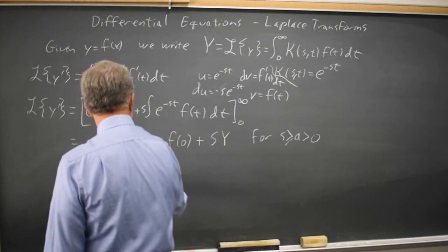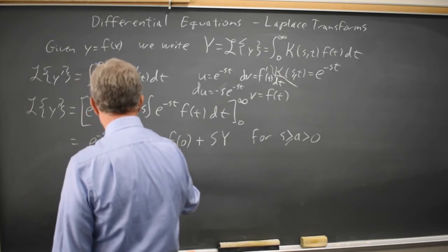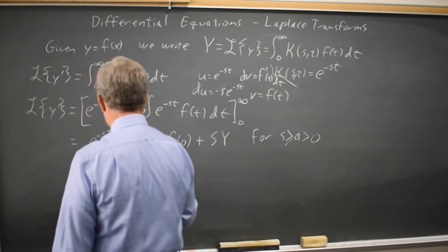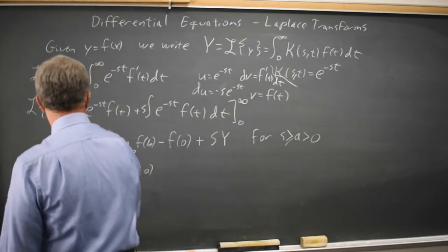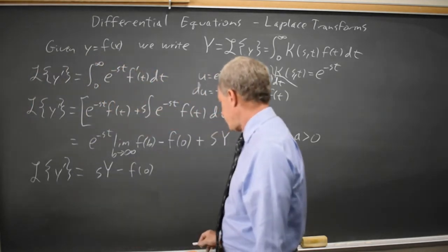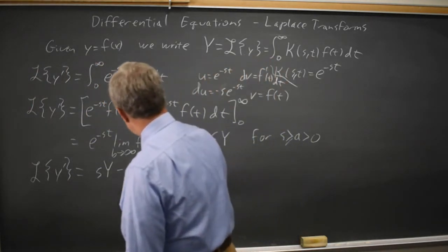So the transform is s times uppercase Y minus f of 0, or y of 0. The transform of y prime is s uppercase Y minus y of 0.